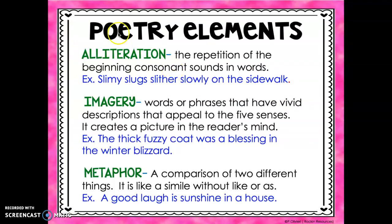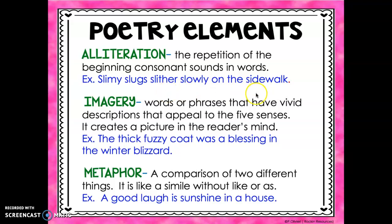Our first element is alliteration. Alliteration is the repetition of beginning consonant sounds in words — we're really looking at that first letter and whether it sounds the same and appears the most in a sentence. For example: 'Slimy slugs slither slowly on the sidewalk.' As you can see, five words in that sentence start with an S. Whenever you see that in a poem, that's alliteration.